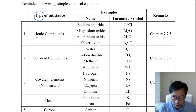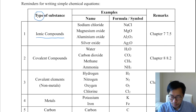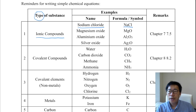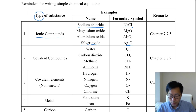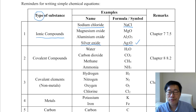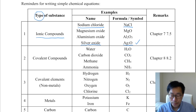For ionic compounds, for example, sodium chloride, you need to write NaCl. For silver oxide, you need to write Ag2O. That means you should be able to determine the formula of the ionic compound.